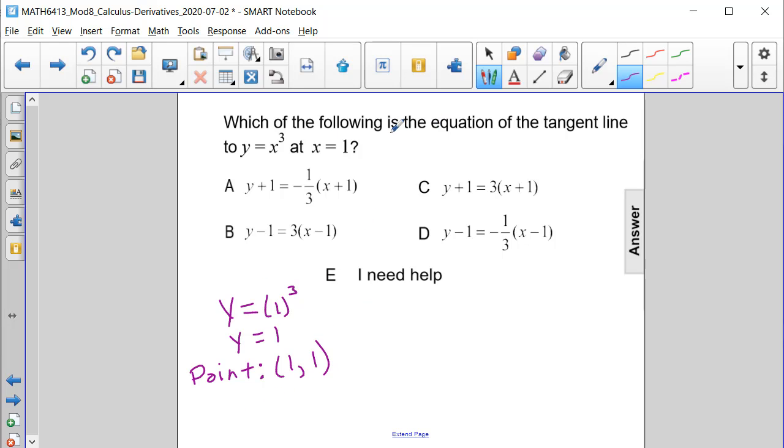Next, in order to find the equation of the tangent line, we have to find first the slope of the tangent line. And to find the slope of the tangent line, we need to calculate the derivative of this function and evaluate it at the given x-coordinate.